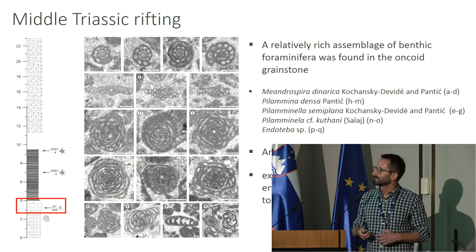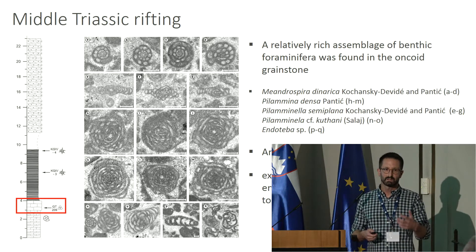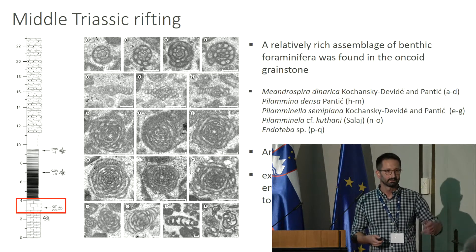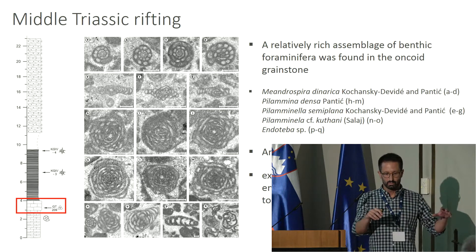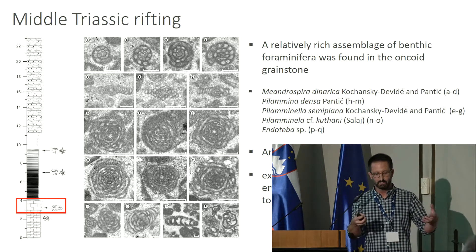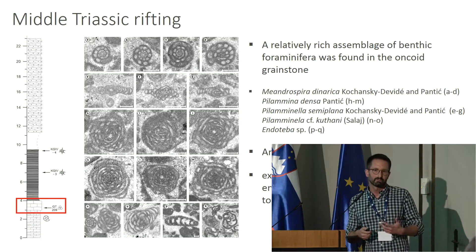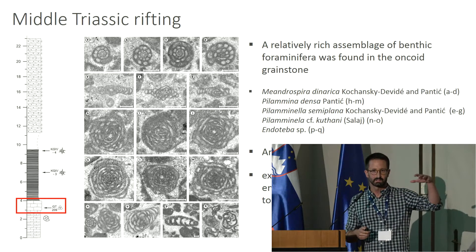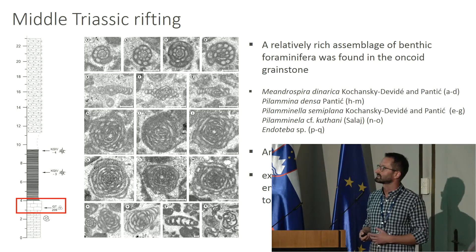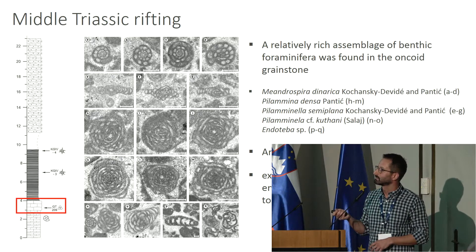Above this limestone there are re-sedimented benthic foraminifera that are also Illyrian in age, proving that during this time a shallow water environment also existed in this area and supplied carbonate material to the deeper part of the basin. It is well known that during the Middle Triassic rifting — well documented in the Dolomites and in Hungary — you have horst and graben structures. As you have rifting, you have blocks of different subsidence: some submerged and some still in shallow waters. This explains the coexistence of shallow and deep water environments.